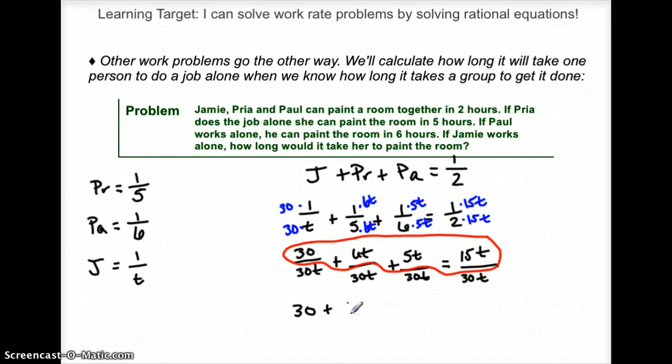So let me just take this apart. 30 plus 6T plus 5T equals 15T. And just solve that as if it were like an algebra 1 equation. And so the first thing I need to do would be to combine my T's on the left side.